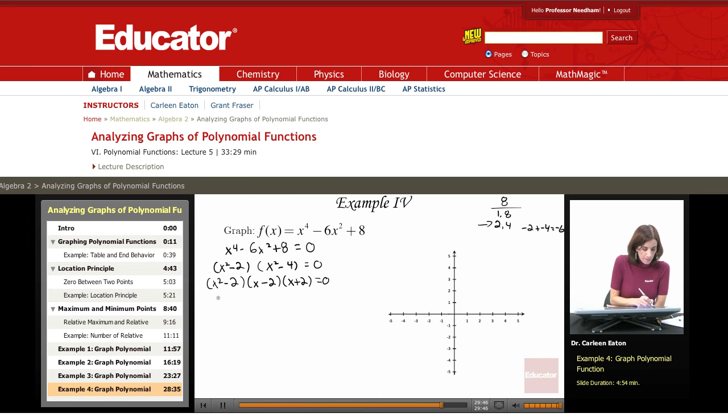Using the zero product property, x squared minus 2 equals 0 or x minus 2 equals 0 or x plus 2 equals 0. So starting with these easier ones, x equals 2, x equals negative 2. I found two zeros.